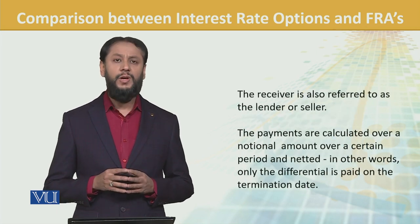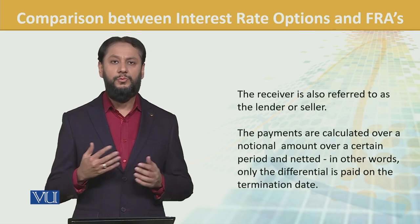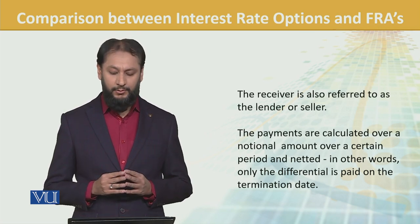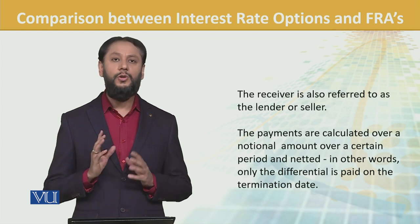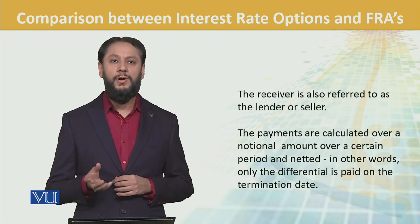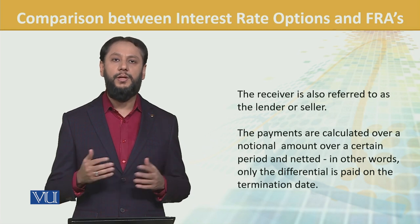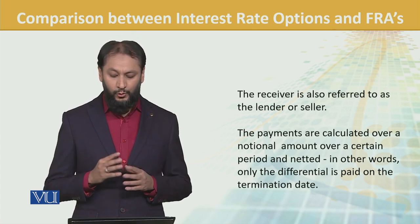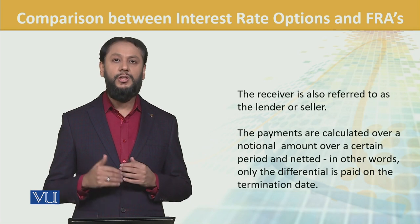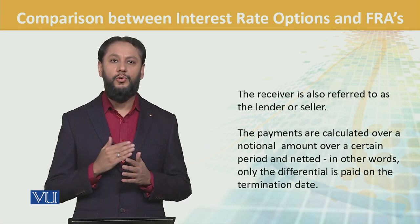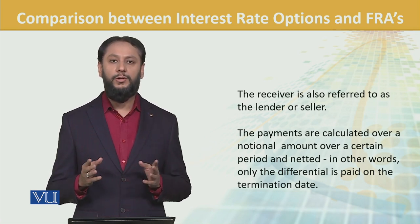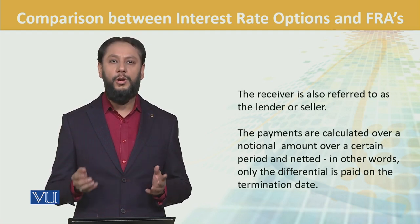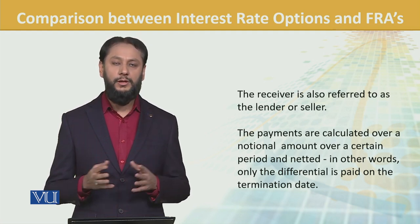The receiver is also referred to as the lender or seller. Payments are calculated over a notional amount — a desired amount such as 100 million or 200 million — and only the differential is paid at the termination date, not the whole amounts being exchanged.